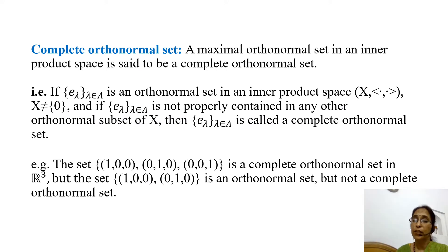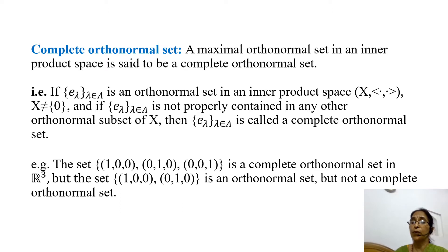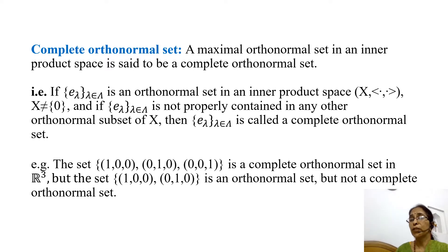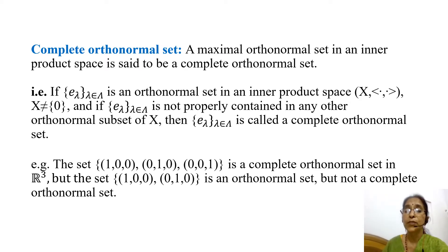We first define a complete orthonormal set. A maximal orthonormal set in an inner product space is said to be a complete orthonormal set. A maximal orthonormal set means an orthonormal set which is not properly contained in any other orthonormal set of that inner product space.